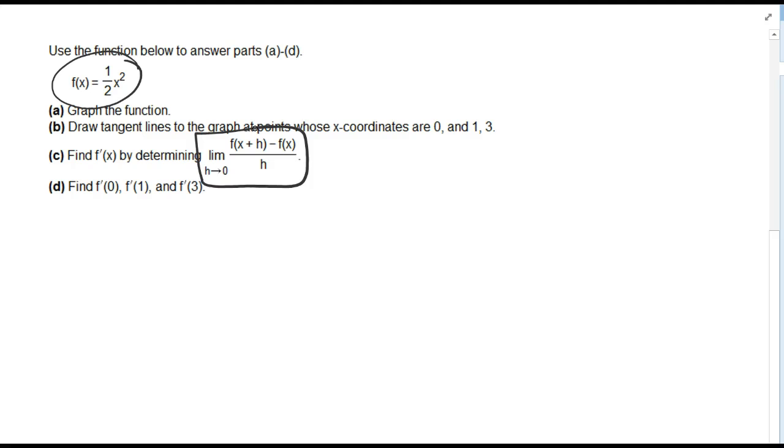So if I want to calculate the derivative here, I'm going to take the limit as h goes to 0 of the function evaluated at x plus h. So it's going to be 1 half quantity x plus h squared minus 1 half x squared over h.